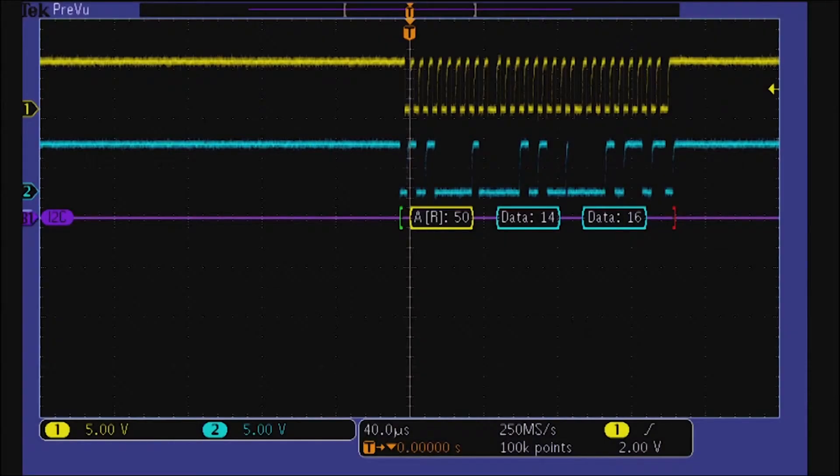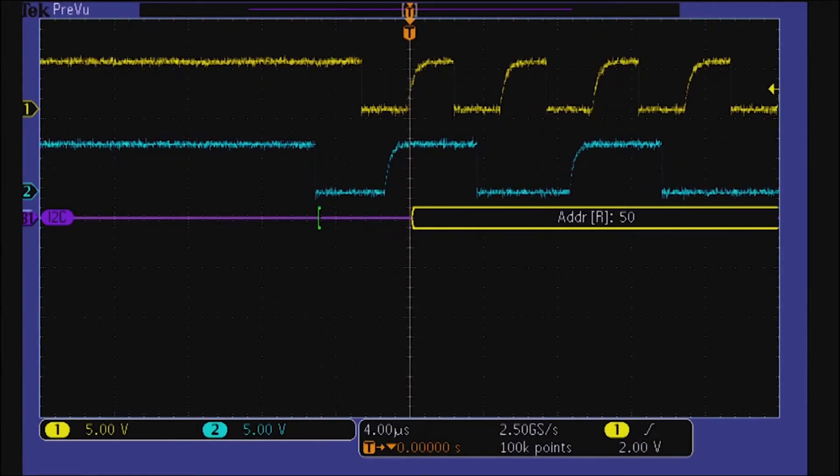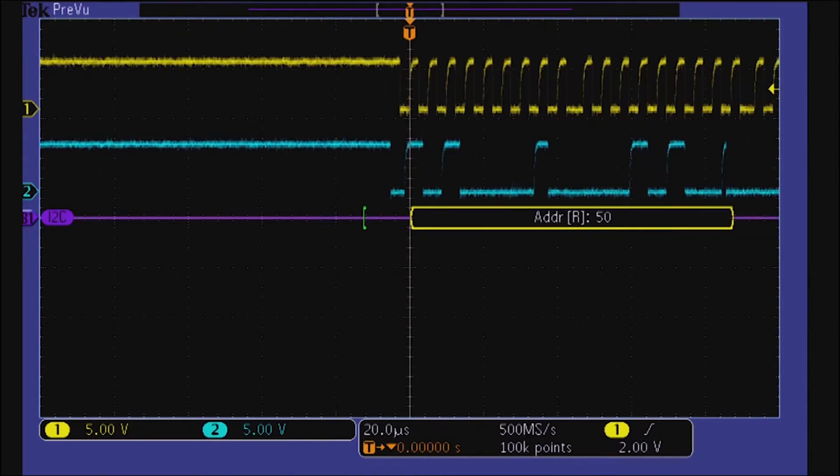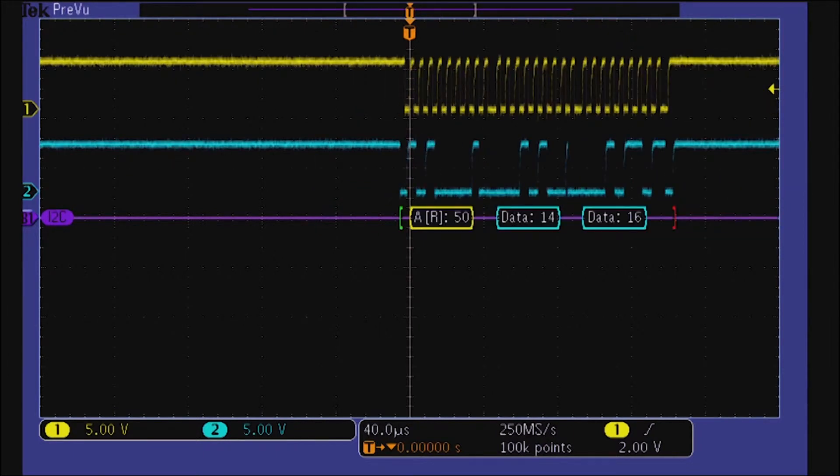When you assign analog input channels to the bus, you'll get to see the signal waveforms as well as decoded bus traffic. If a decoded message looks wrong, you'll have the signal waveform close at hand.